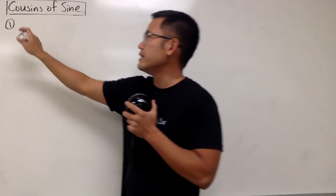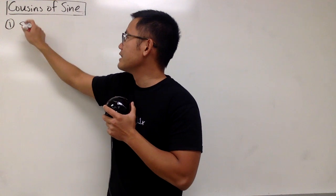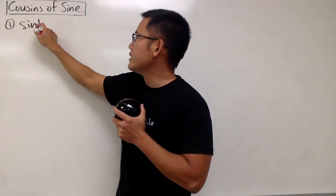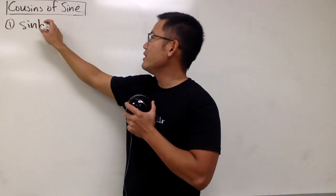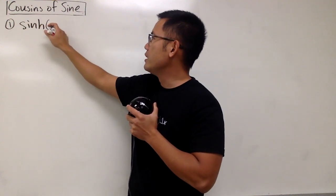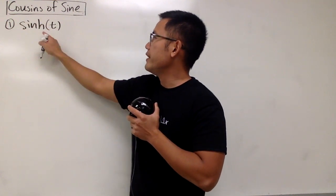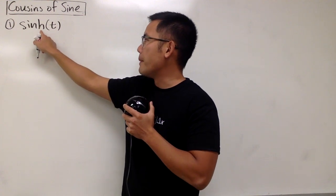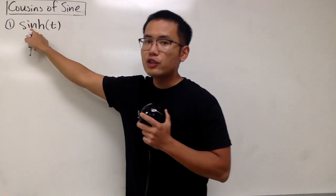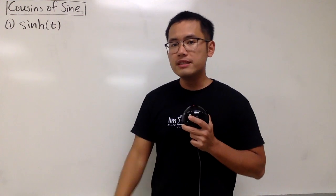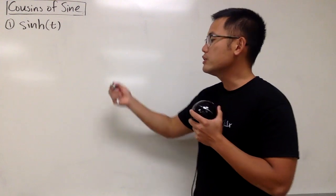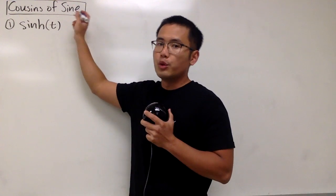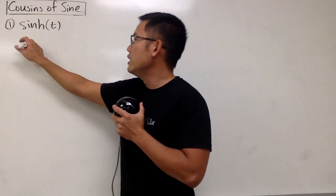The notation for that is: you just have sine with an h next to it. The input here is t, and this is called the hyperbolic sine function. Why is this called the hyperbolic sine? Well, to explain, we will have to look at the original sine function and, of course, the unit circle.